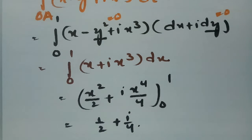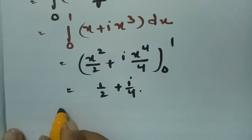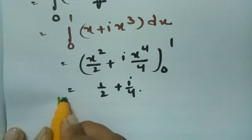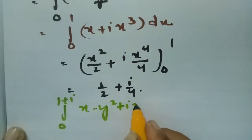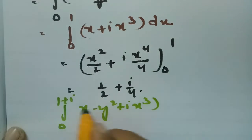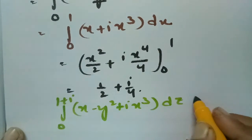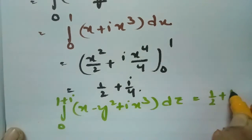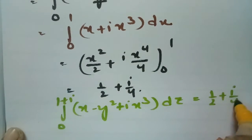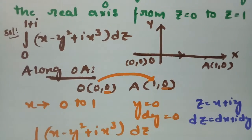Substituting the limits gives 1/2 + i/4. Therefore our required value — the integral from 0 to 1+i of (x - y² + i·x³) dz along the real line from z = 0 to z = 1 — is 1/2 + i/4.